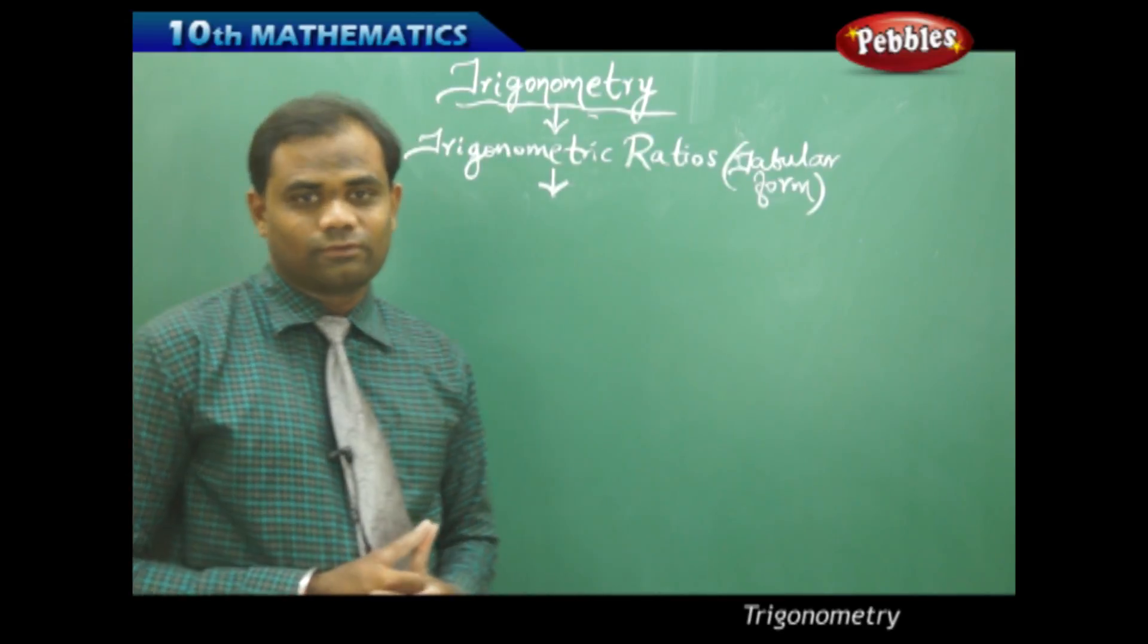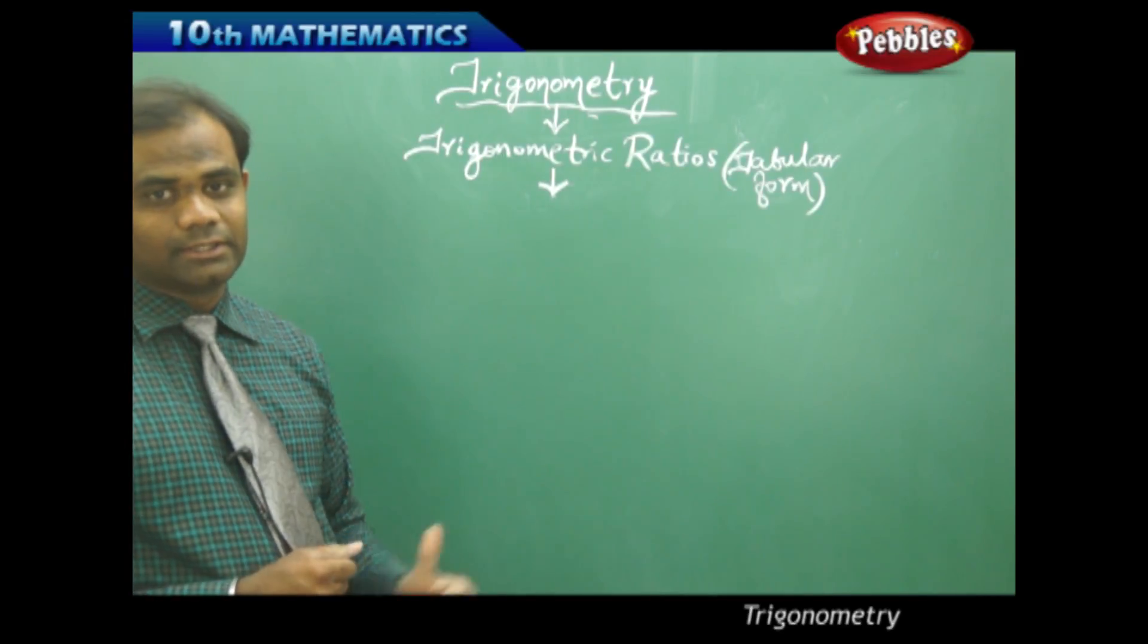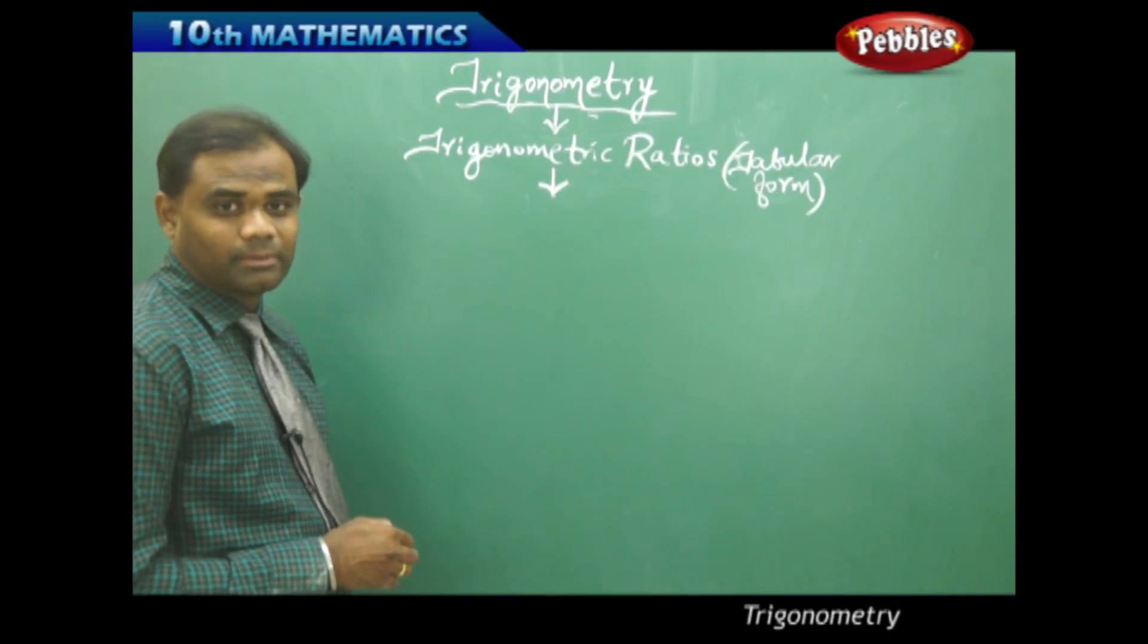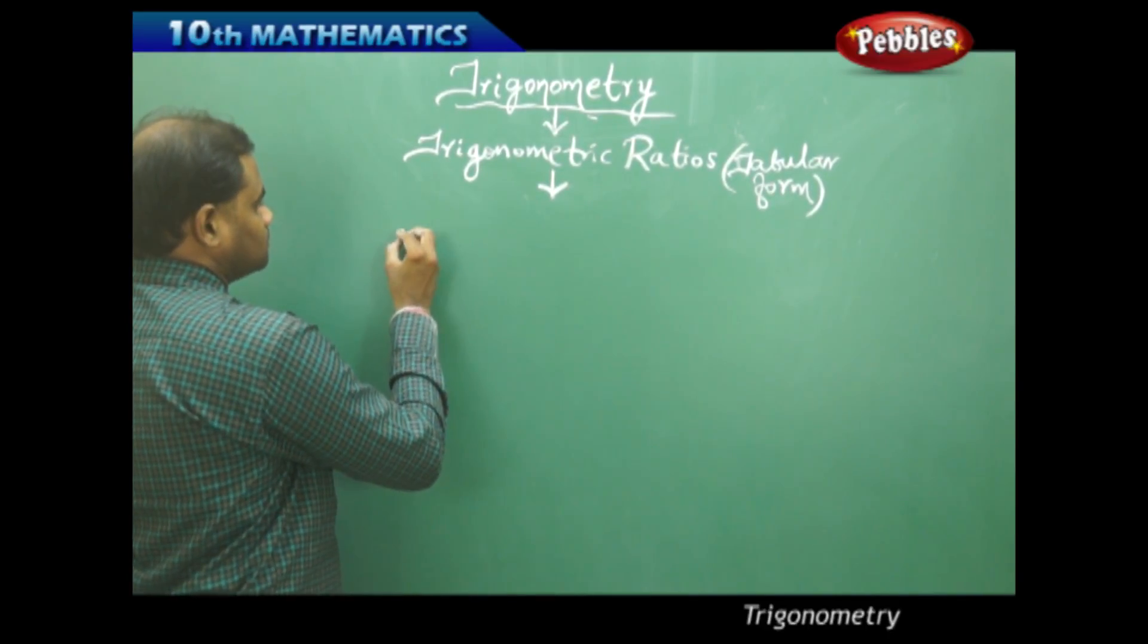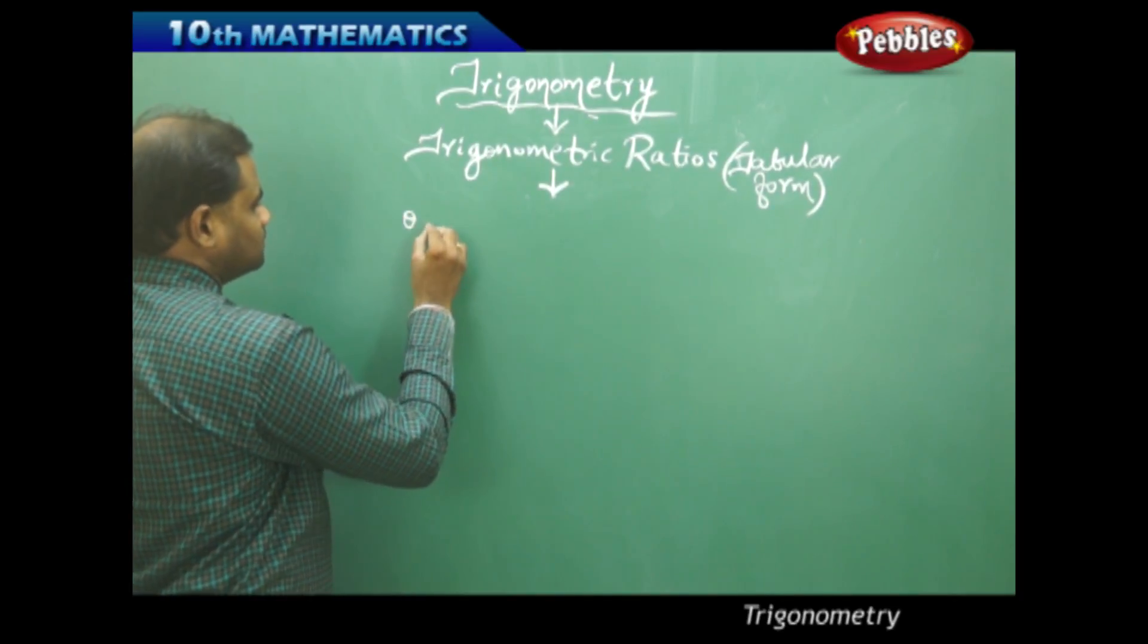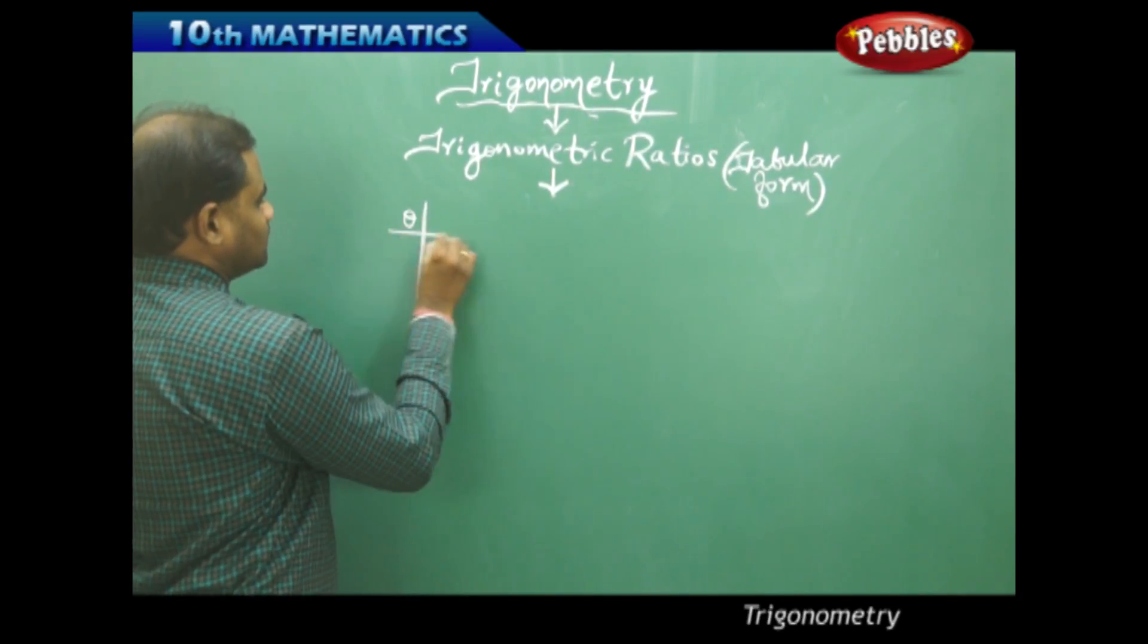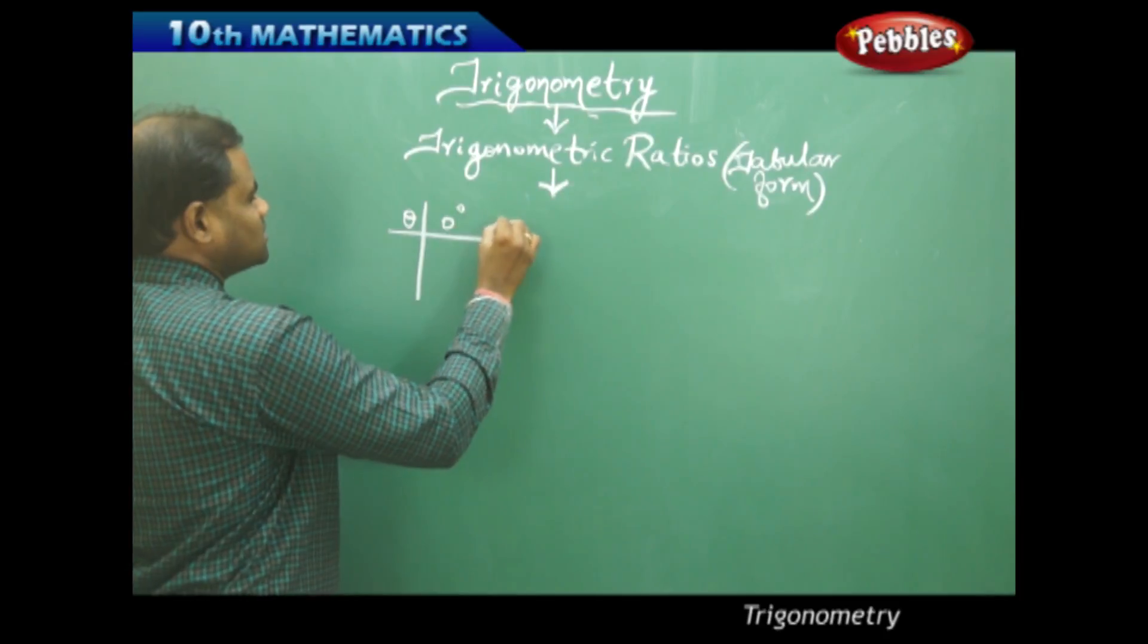So let's see the tabular form of all the special angles taken into consideration for all the trigonometric ratios. So I take the theta here and then I take each of the standard angle 0,